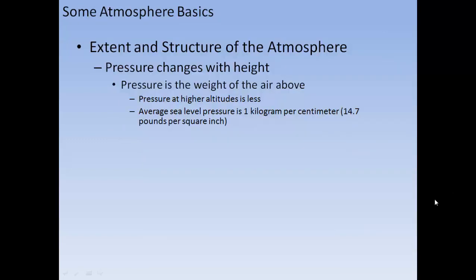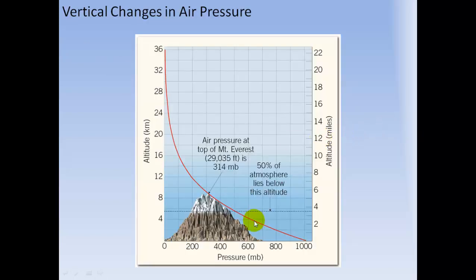Extent and structure of the atmosphere: pressure changes with height. Pressure is the weight of the air above, so pressure at higher altitudes is less. Average sea level pressure is 1 kilogram per centimeter squared, or 14.7 pounds per square inch. A graph of air pressure shows it's at its highest at sea level and much lower at the top of Mount Everest. About 50% of the atmosphere lies below around 6 kilometers, or about 5 miles above sea level.